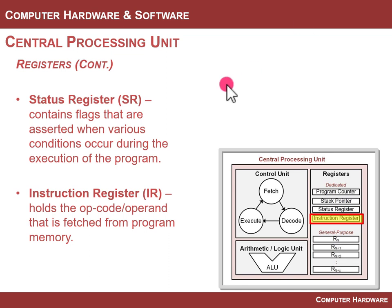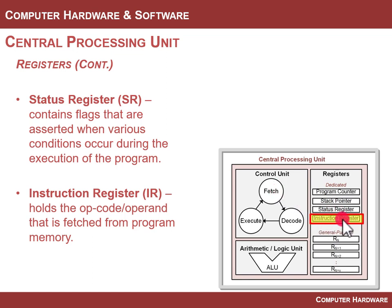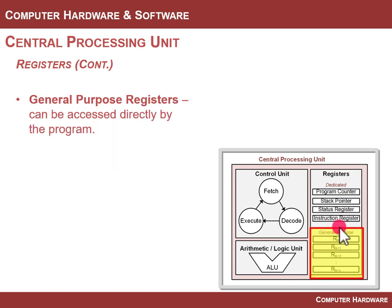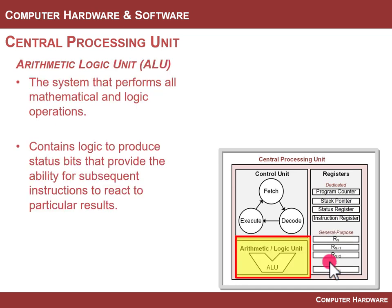The instruction register is where the fetched op code sits while you decode it. For example, instruction A has an op code of hex A — when that fetch is done, hex A is sitting in the instruction register, then you decode it and execute it, then go fetch the next instruction. After the dedicated registers come general purpose registers — each computer has a number of these, some as few as one or two, some providing 32 up to 64 registers — fast storage you can use in your instructions.